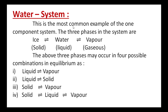The water system is the most common example of a one-component system. The three phases in the system are ice (solid form), water (liquid form), and vapor (gaseous form). These three phases can occur in four possible combinations in equilibrium.